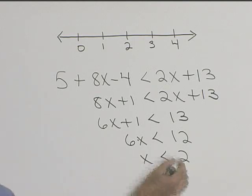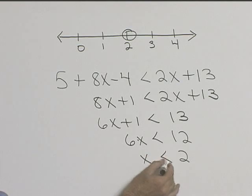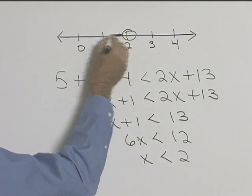Let's now graph that. Our point starts at 2. Since it's less than 2, it's not equal to, so we use an open circle, and it's everything less than 2, so everything to the left.